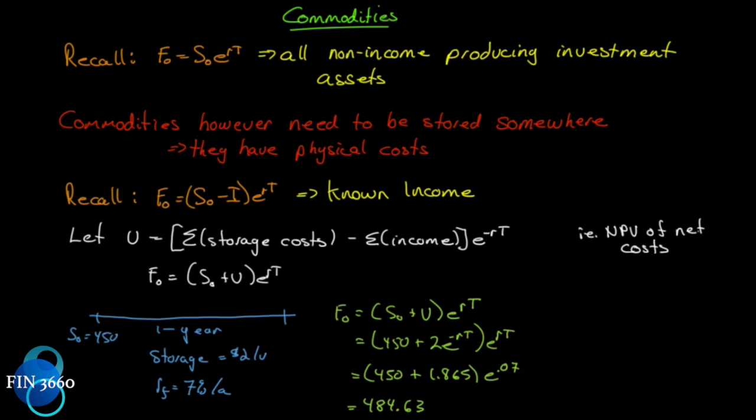Our arbitrage arguments run along this line: if the futures price is greater than $484.63, we don't have to draw the whole thing out now - we know what we're doing. We want to buy low and sell high. So since the futures price is greater than $484.63, we would start by selling the high side, which is we would sell a futures at F₀, and we would buy at spot and store it for the year. So we would have to borrow $451.865 to get there. It'll grow to $484.63, but we've locked in a higher price.